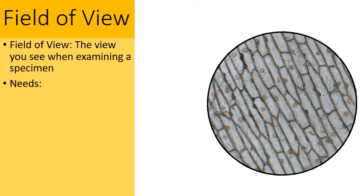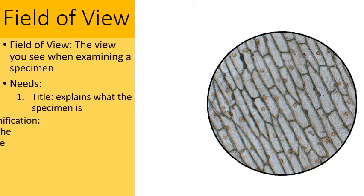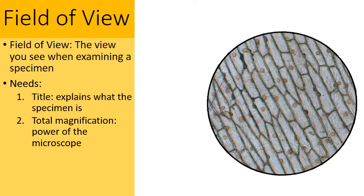Now we have some needs to address. The first need is a title. Tell the viewer of your drawing, your observation, what the specimen is. What are you actually looking at? The next would be: What is the total magnification of the microscope? Remember, science is repeatable.